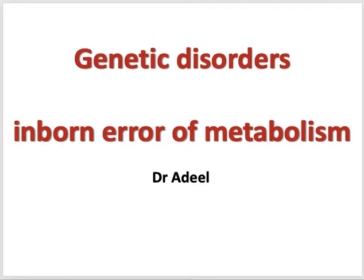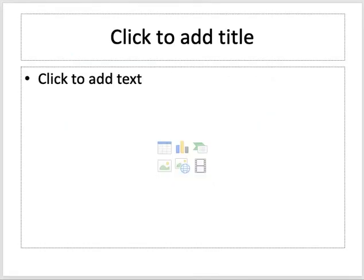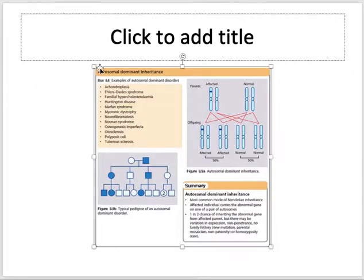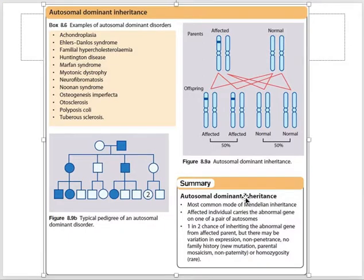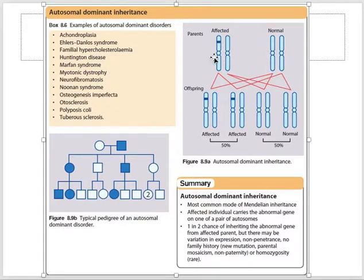To talk about Mendelian inheritance, I will cover autosomal dominant, autosomal recessive, X-linked dominant, and X-linked recessive patterns. These are disorders caused by mutation of one or both copies — alleles — of a gene, inherited either in an autosomal fashion or X-linked fashion.